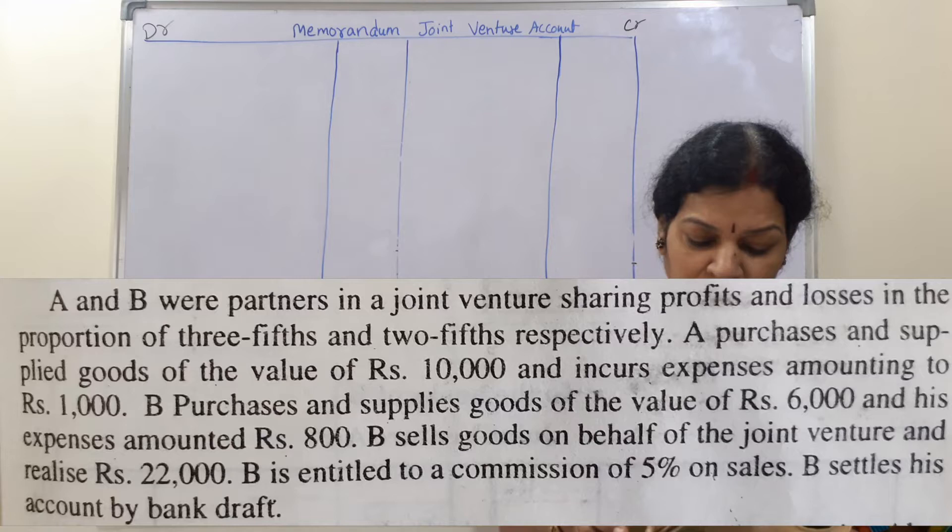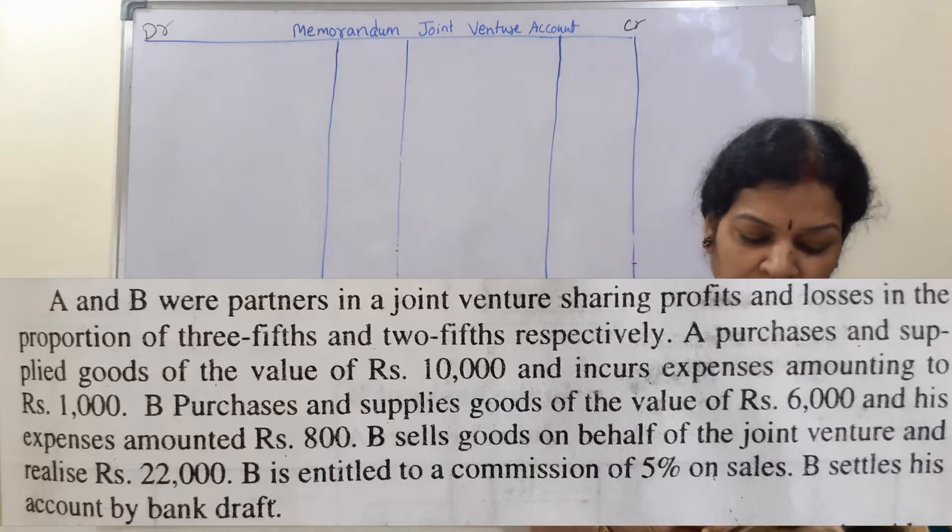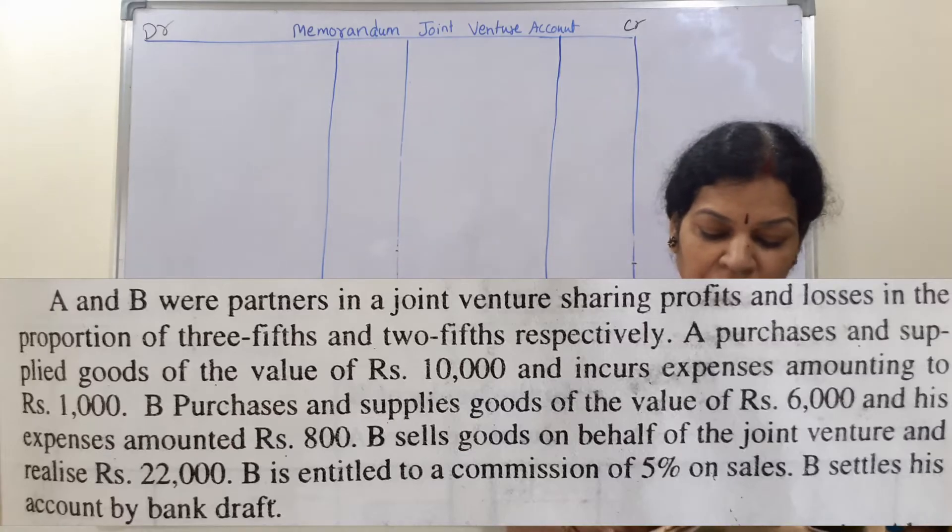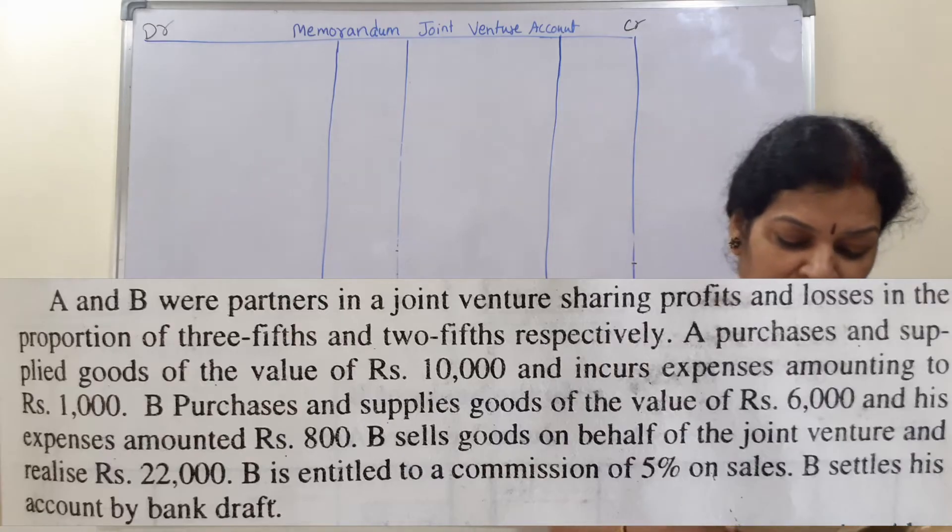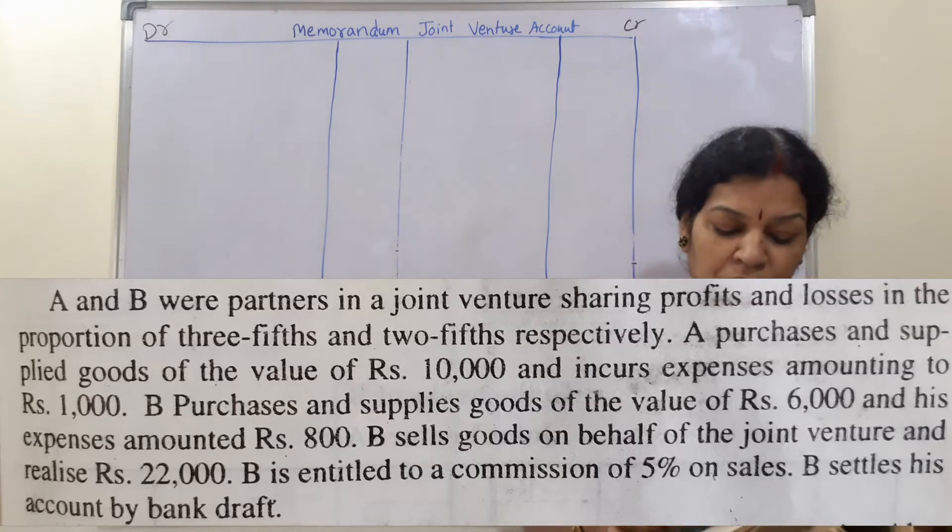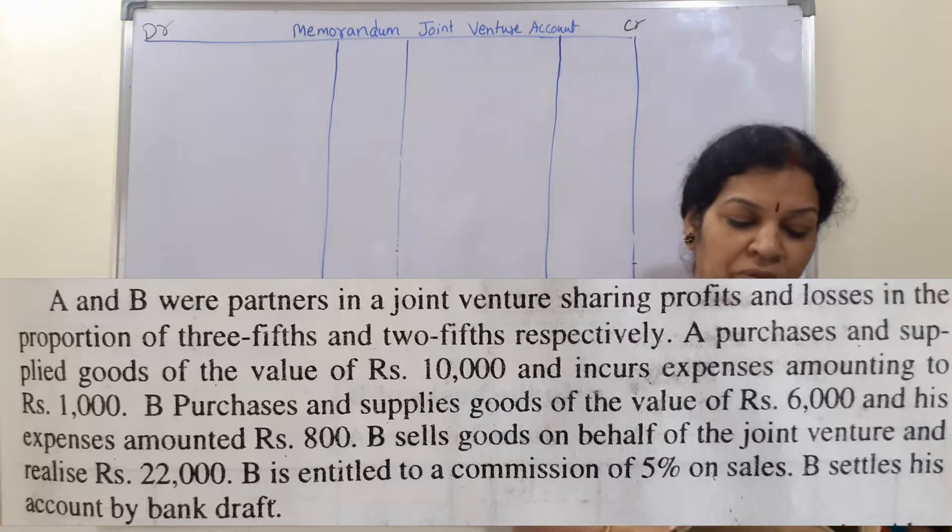B purchases and supplies goods to the value of 6,000 and his expenses 800. B sells goods on behalf of joint venture and realizes 22,000. B is entitled to commission of 5% on sales. B settles his account by bank draft. Show the memorandum joint venture account and in the books of B joint venture with A, in the books of A joint venture with B's account.